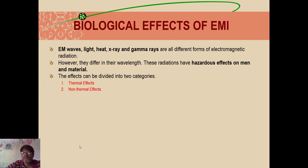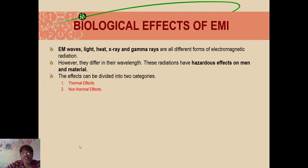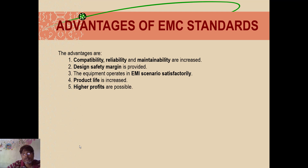The biological effects of EMI span many forms: EM waves, light, heat, X-rays, and gamma rays — all different forms of electromagnetic radiation. When we are exposed to these radiations, since they have different wavelengths, the effects are also different. The hazardous effects on humans and materials can be categorized into two things: thermal effects and non-thermal effects. Thermal effects occur because ionization takes place due to radiation — ions move around, thermal heat is produced, and it ends in burning. Non-thermal effects lead to improper functioning, non-performance, and cancers.